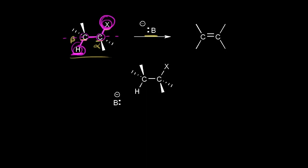The mechanism for this reaction is a concerted mechanism. So the strong base comes along and takes this proton, which leaves these electrons; these electrons move into here to form our double bond, at the same time that these electrons are coming off onto our halogen — so it's concerted. The electrons in the carbon-hydrogen bond move in here to form our double bond, and our product is an alkene.